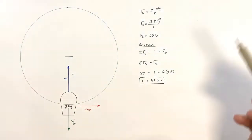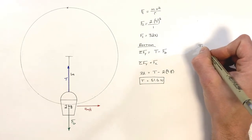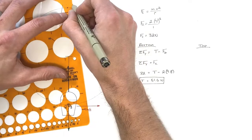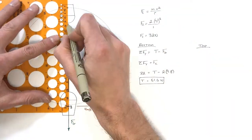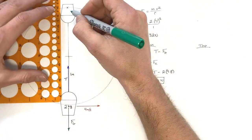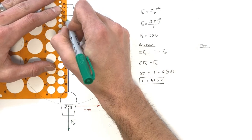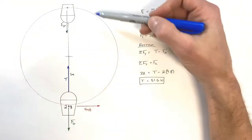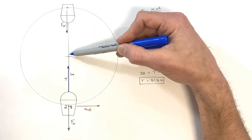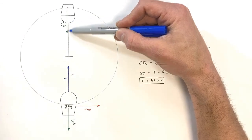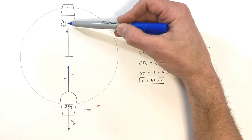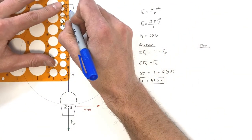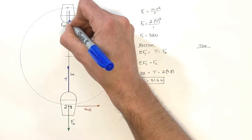Now let's look at what happens when the bucket is at the top of the circle. Gravity is still acting downward on the bucket. What's different is the tension in the string — because the string can only pull on the bucket, the tension will always pull the bucket towards the center of the circle. So at the top, the force of tension is actually directed downward toward the center.